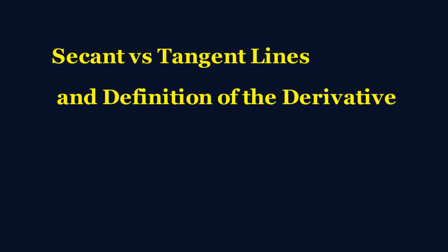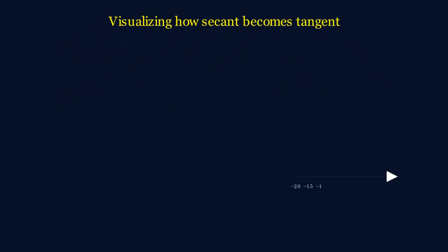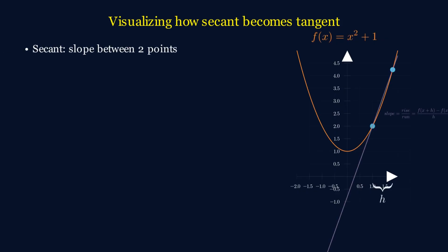Let's talk about secant and tangent lines. First, a secant line shows the slope between two points on a curve. In other words, it represents the average rate of change over an interval.